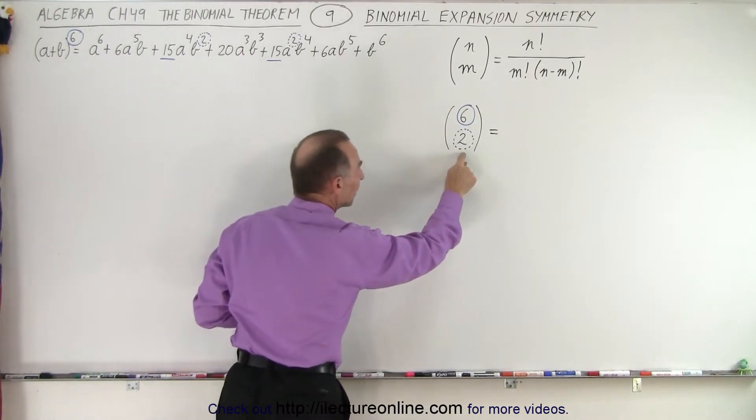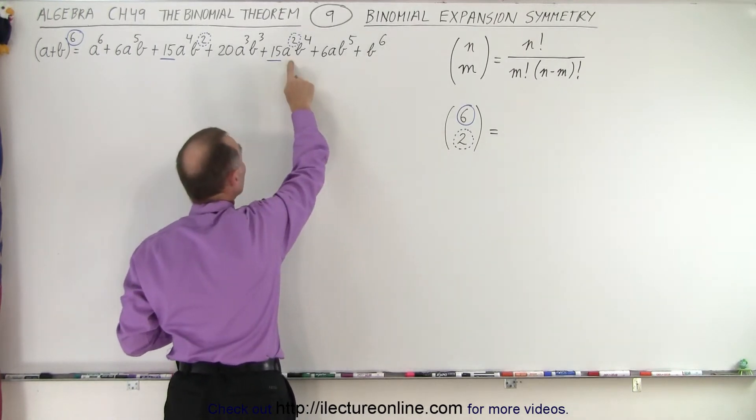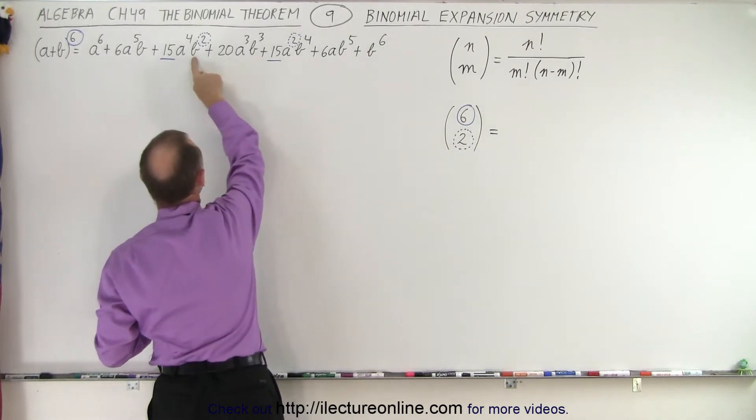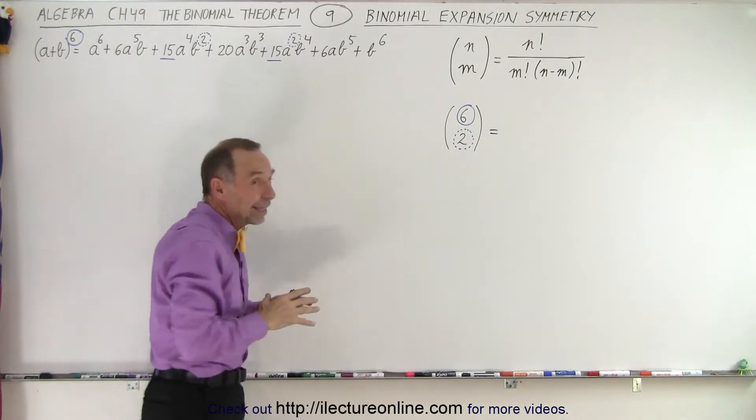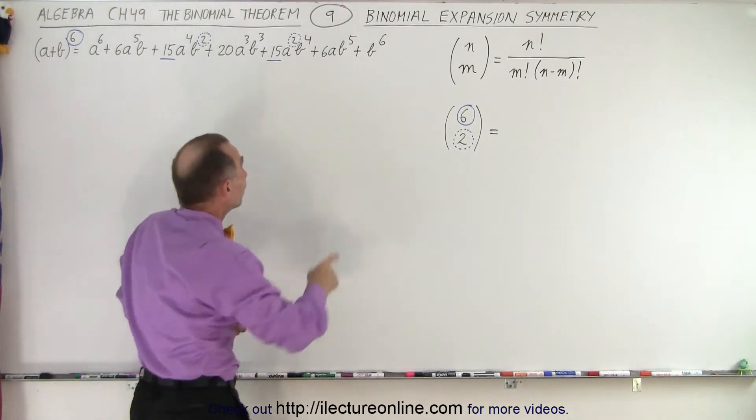Then we said that the bottom number corresponds to the exponent of the second letter B. But it turns out it can actually also be the exponent of the first letter A.